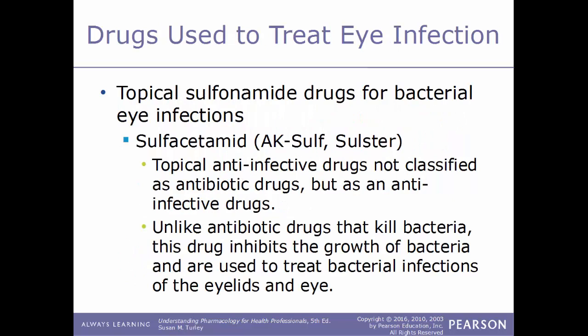Another class of drug used to treat bacterial eye infections are topical sulfonamide drugs. An example is sulfacetamide, sold under the names AK-Sulf and Bleph-10. This is a topical anti-infective drug that is not classified as an antibiotic drug, but as an anti-infective drug, because unlike antibiotic drugs that actually kill bacteria, this drug inhibits the growth of bacteria and is used to treat bacterial infections of the eye and eyelids.